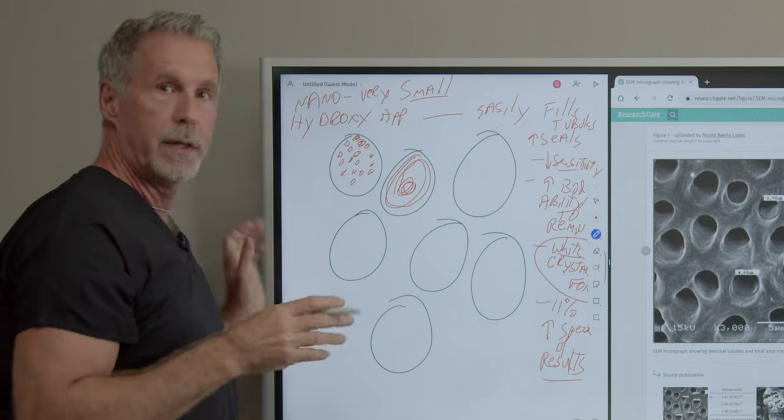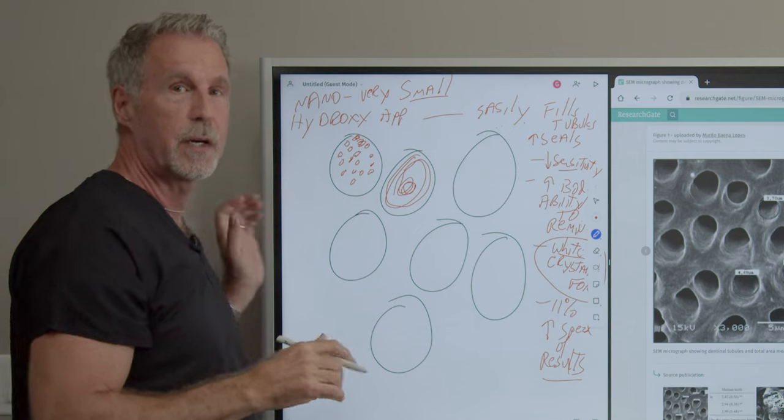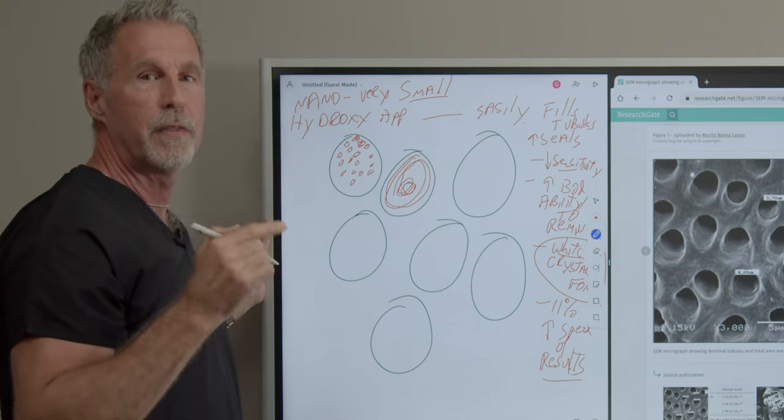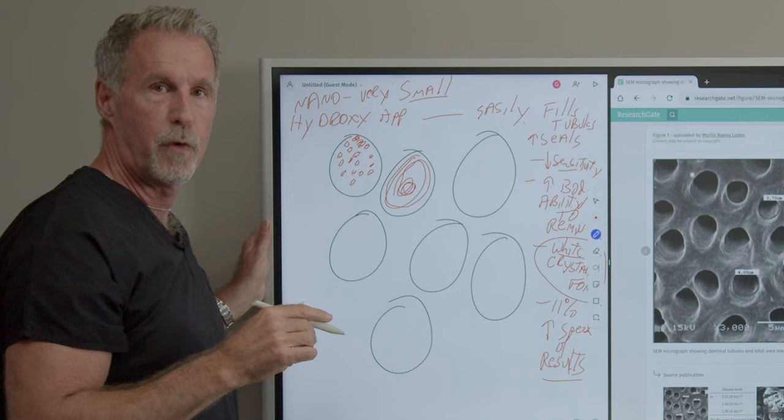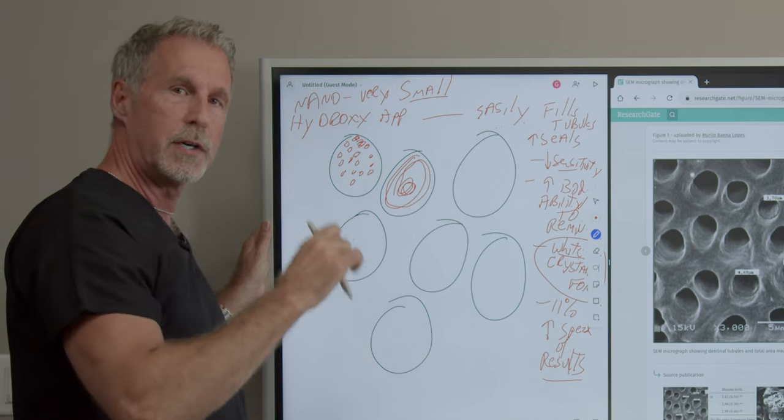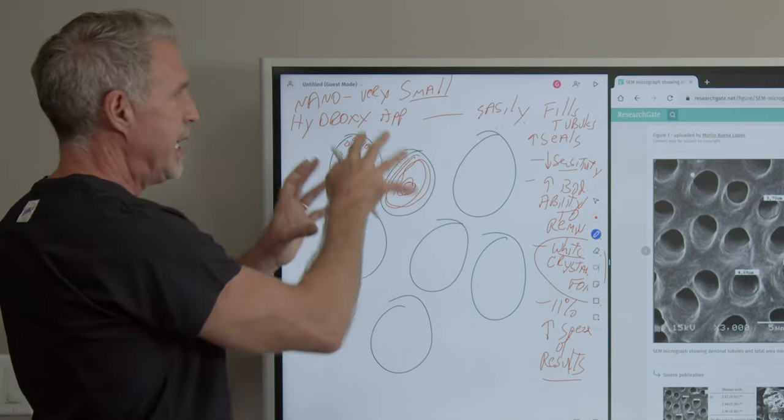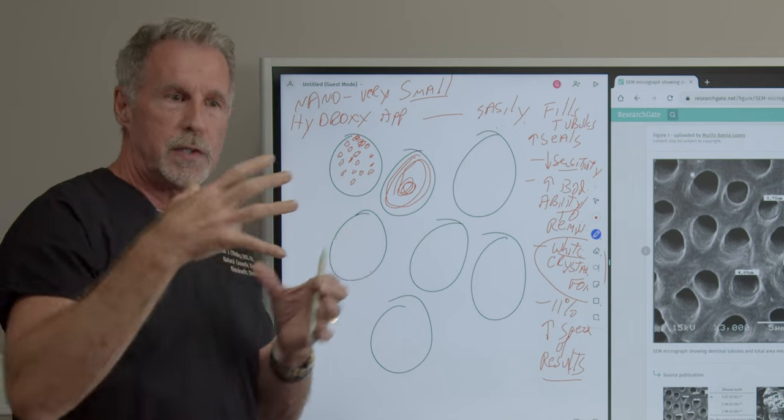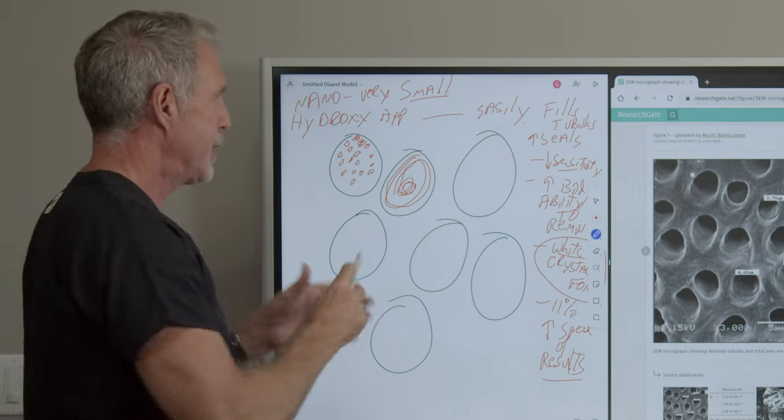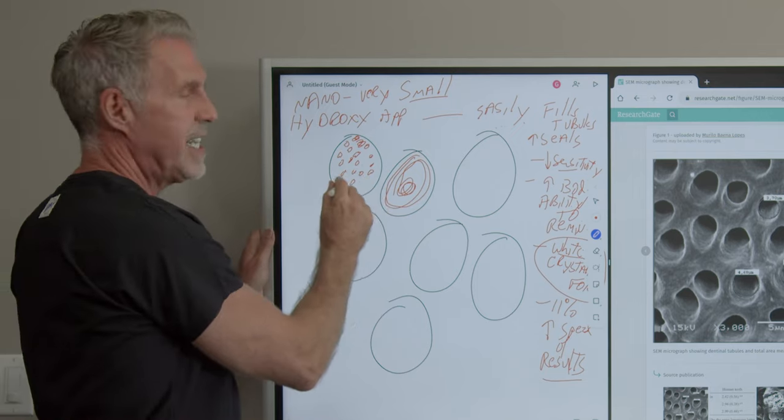But that's why in the Great Oral Health toothpaste product, we made sure that we have the nano-hydroxyapatite forms in there. We also have some of the other hydroxyapatite forms to help seed and hold everything in place. So it works synergistically to bring about this great seeding that will happen.